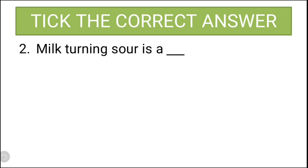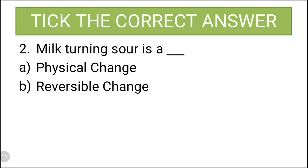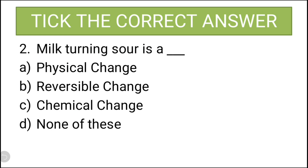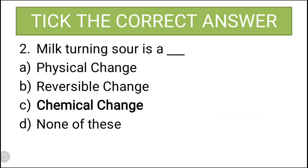The next question is: milk turning sour is a — the options include chemical change among others. Milk turning sour is a chemical change, so the correct answer is C, that is chemical change.